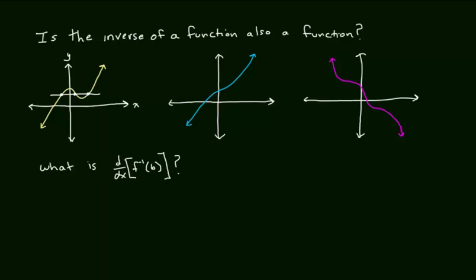Over here in the blue graph, you would say that this passes the horizontal line test. Therefore, the inverse of the blue function is also a function. But the question becomes, how do I use calculus to show that that is true? So analyze this blue graph for a minute and decide what about this graph, in terms of calculus, would show me that the inverse is also a function, or show me that it passes the horizontal line test.